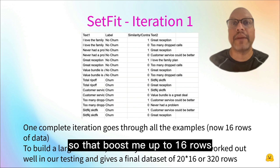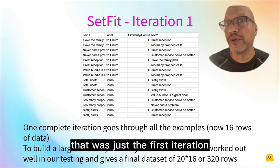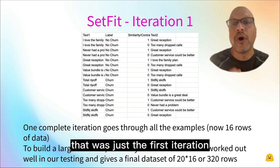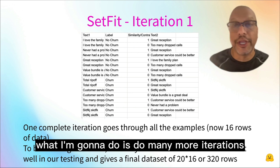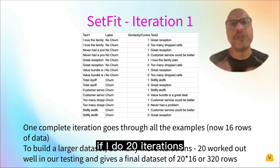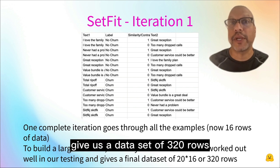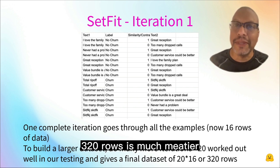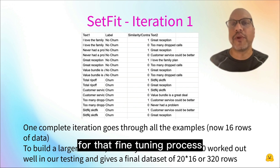That boosts us up to 16 rows — and that was just the first iteration. What we're going to do is many more iterations, because remember, we're sampling that second text randomly. So if we do 20 iterations, that gives us a dataset of 320 rows — much meatier, much better for the fine-tuning process.